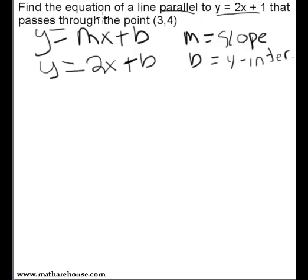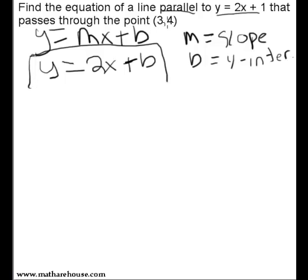And this is where the point (3, 4) comes into play. We know that (3, 4) is on the new line that we're looking for. So we know that if we substitute (3, 4) into our equation for x and y, the equation should hold true. After all, that's what it means for a point to be on a line.